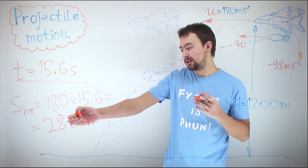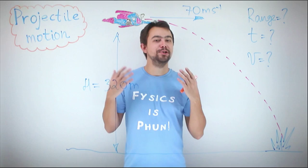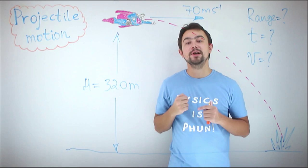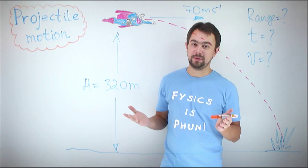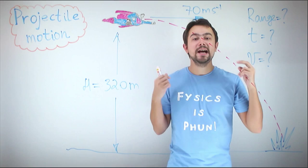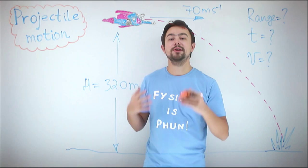Another example: Superman, one week after his humiliating bus ride, is flying again at a height of 320 meters with a velocity of 70 meters per second, when suddenly he forgets how to Superman. We are interested in the range — how far horizontally he will fly — the time of flight, and the final velocity. We consider the vertical and horizontal motions separately.